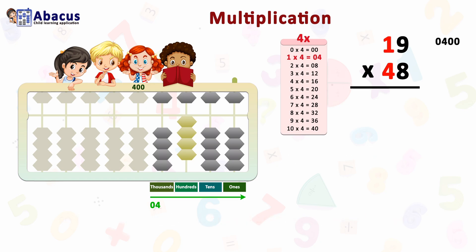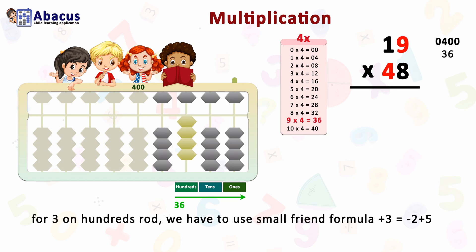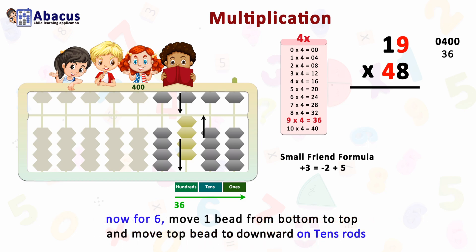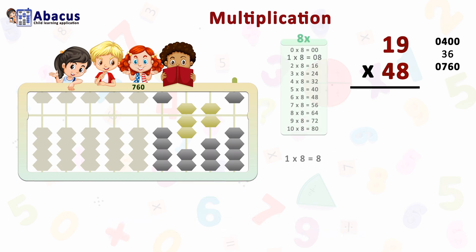The second step is 9 times 4 equals 36. A three-digit calculation remains — 9, 4, and 8 — so three rods are used. Set 36 from the hundreds rod. For 3 on the hundreds rod, there are no beads on the bottom, so use the small friend formula: plus 3 equals minus 2 plus 5. Move down two beads from top to bottom and move the top bead downward. For 6, move one bead from bottom to top and move the top bead on the tens rod. After the second step, we have 760.